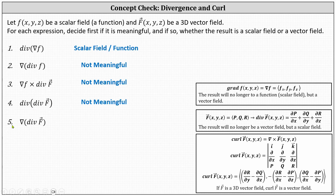For number five: we begin with the divergence of the vector field F, which results in a scalar field or function, and then we determine the gradient of that scalar field or function, which results in a vector field. Number five is meaningful and results in a vector field.